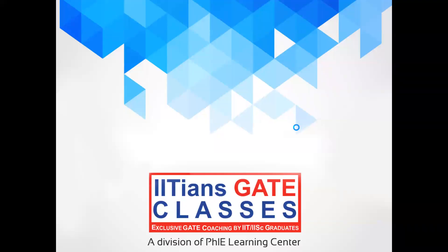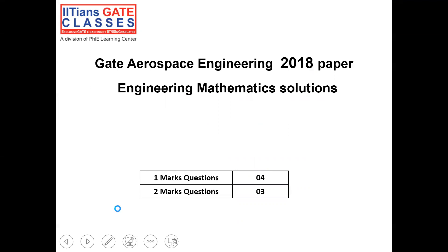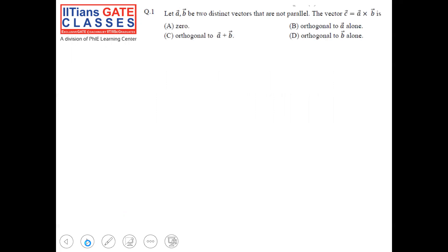Hello everyone, welcome to this video. In this video we are going to study the questions which were asked in the 2018 paper of aerospace engineering. Just to give a summary: from the mathematics subject, there were a total of seven questions asked, out of which four questions were asked for one mark and three questions were asked for two marks. So let's try to solve these questions one by one.